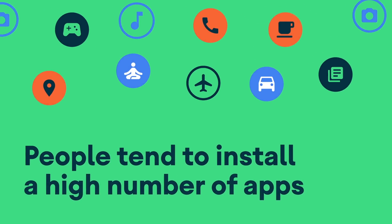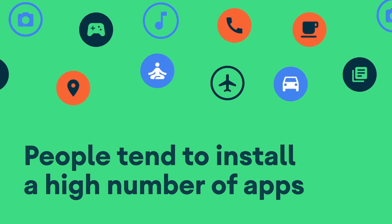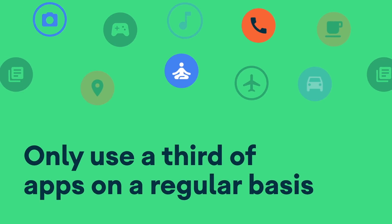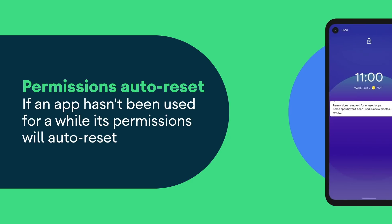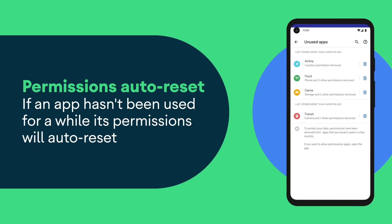Another great feature we built in Android 11 was auto reset. People tend to download and install a high number of apps on their phones, but they only interact with a fraction of them on a regular basis. So for those apps that you haven't used for a while, Android would auto reset all of the granted runtime permissions associated with the app and notify you.